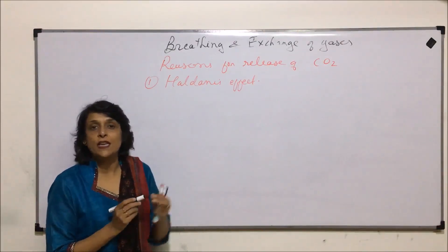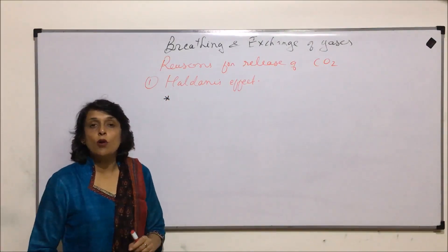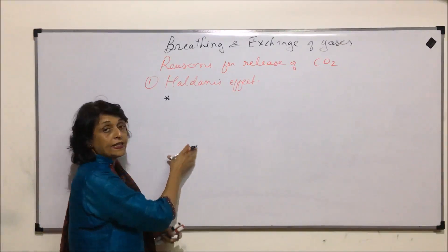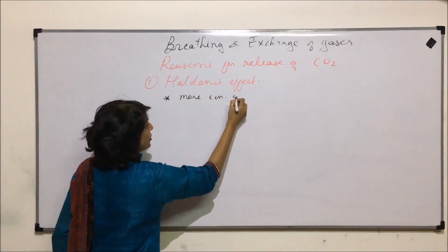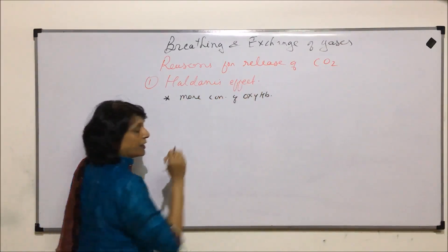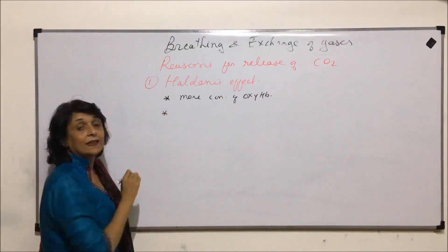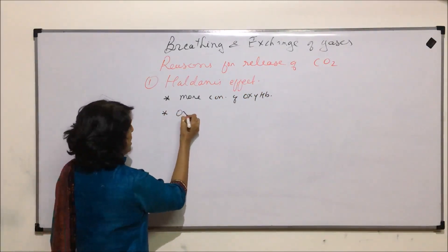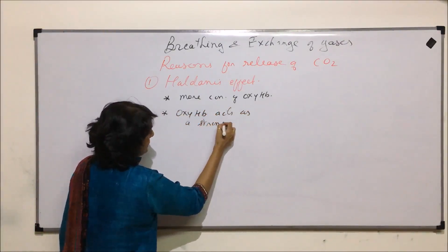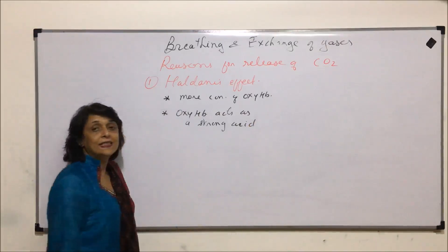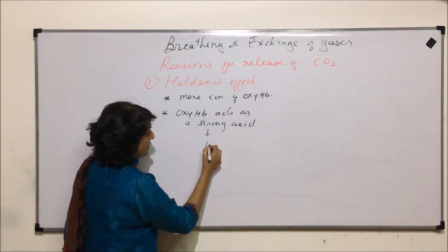Haldane's Effect says that as more and more oxy-hemoglobin is formed, it is responsible for the release of carbon dioxide. More concentration of oxy-hemoglobin is responsible. The reason oxy-hemoglobin is responsible is that it acts as a strong acid — oxy-hemoglobin acts as a strong acid.